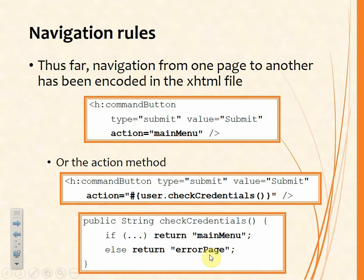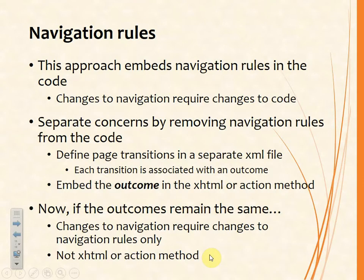I've mentioned in the past that whenever you're thinking about the responsibilities of a method, if you're having to use the word 'and' then you're doing too much in that one method. So let's take a slightly different approach — instead of returning the next view, let's report the outcome: success, failure, or some other kind of label that you might want to give to the outcome. If we do that then we're a step towards separating concerns, and we can remove those navigation rules from being hard-coded in the methods and facelets and take them out into a separate XML file.